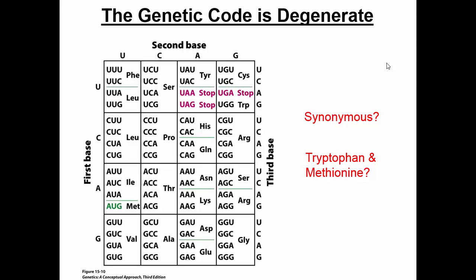There are only two exceptions to this. The amino acids tryptophan and methionine, if you look carefully on this chart, are only encoded for by one codon each. So right here is tryptophan, and here's methionine, and you won't see them anywhere else on the chart.